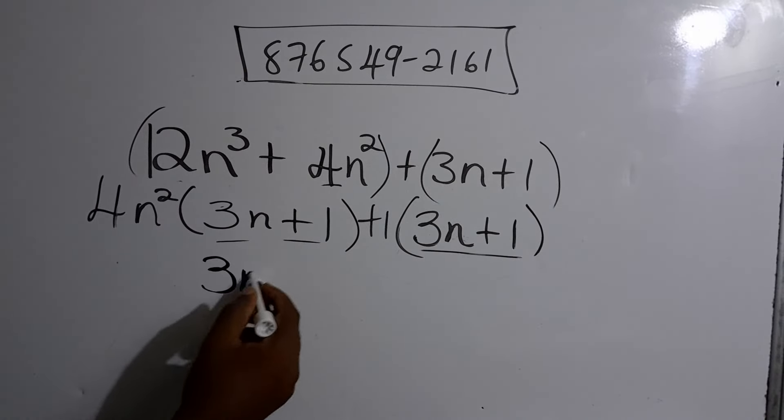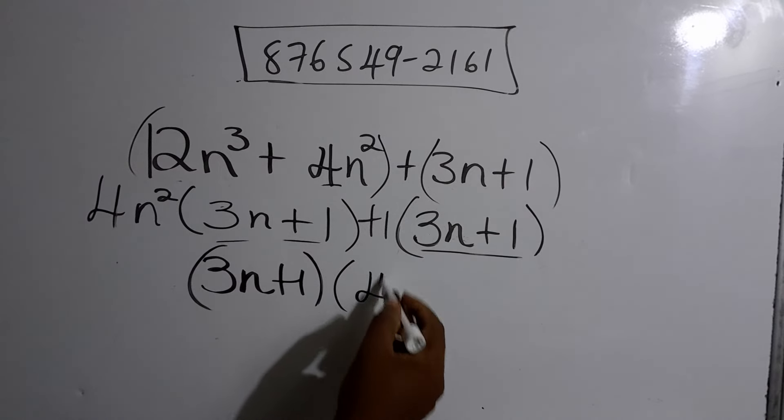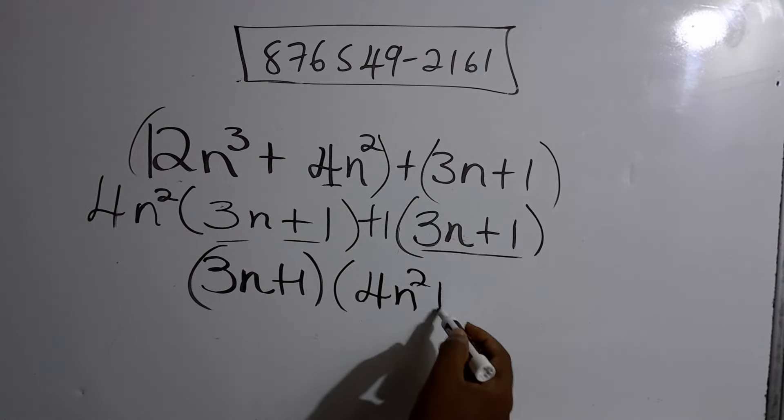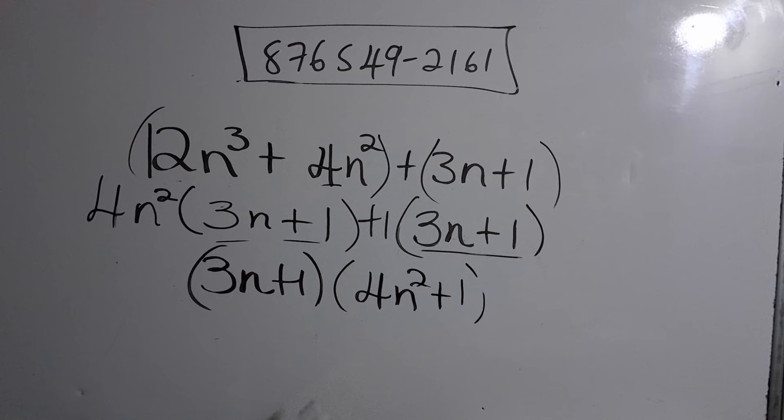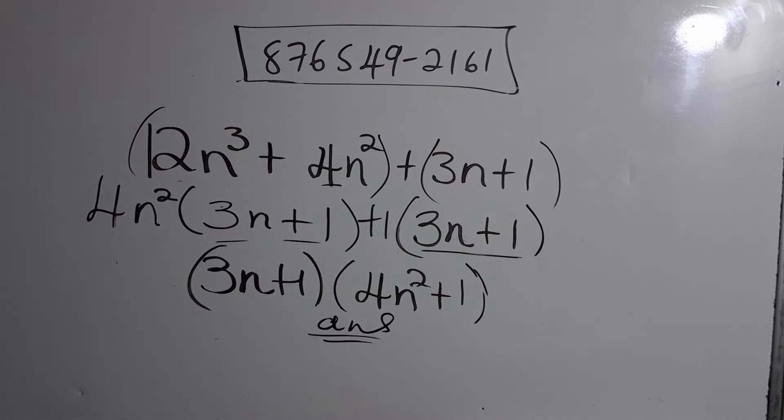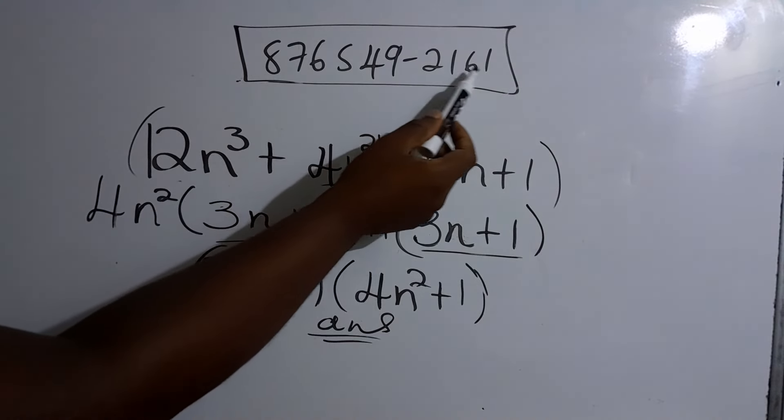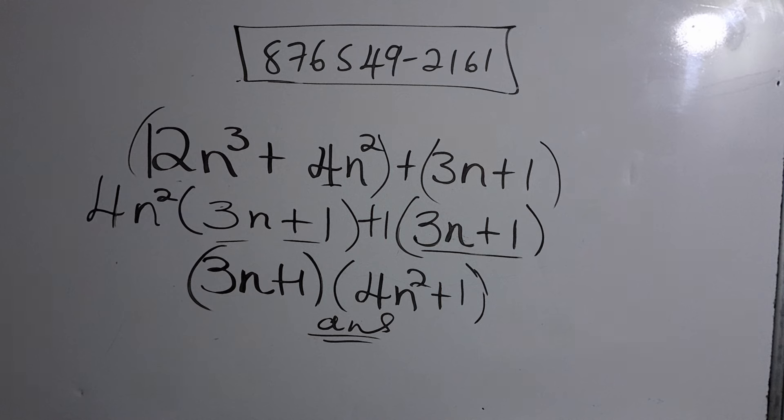So it's (3n + 1)(4n² + 1). Do the right thing guys, join the online class. It doesn't matter where you are in the world or in the Caribbean, it's online, we just work out the time difference and that's it. Call this number: 876-549-2161.